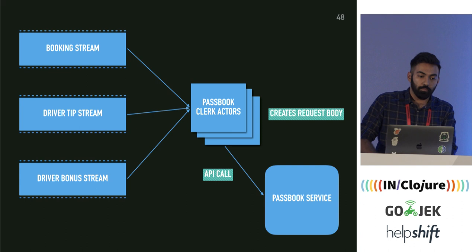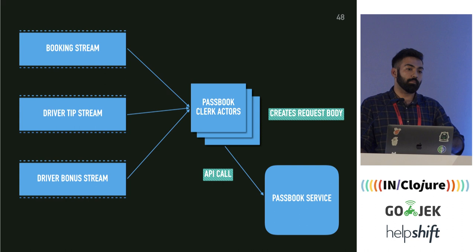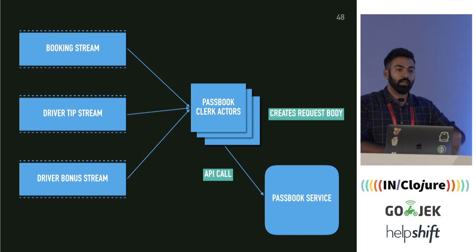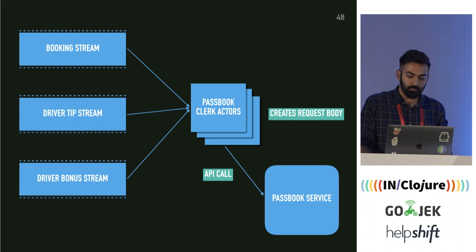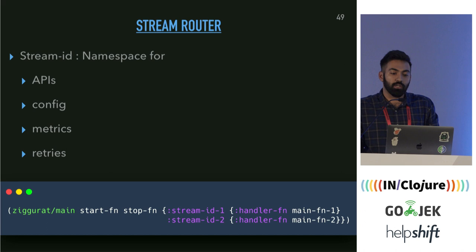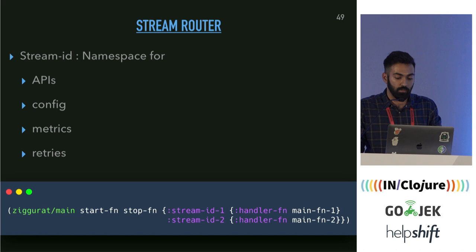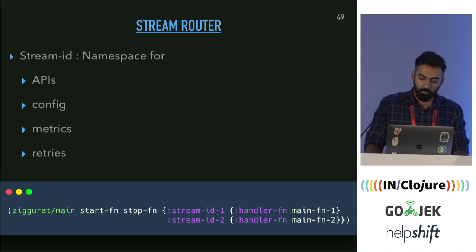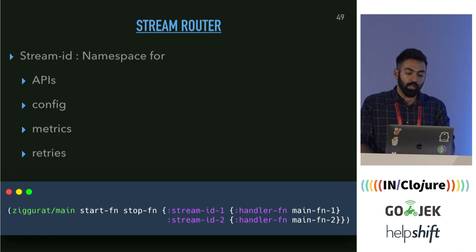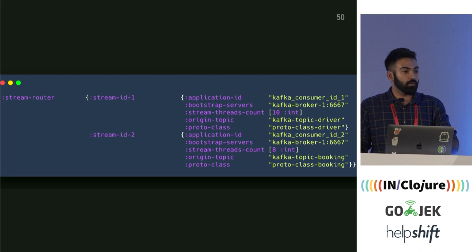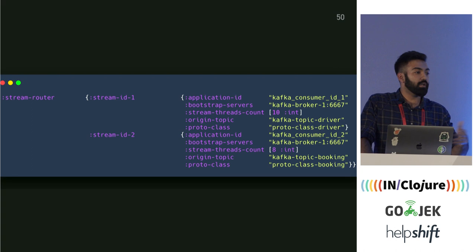A single actor can now read from three streams and process each stream separately on its own threads. Even if one stream fails, only that part of the actor would stop working; everything else runs fine. We introduced something called a stream router — like a normal HTTP router, it takes in a stream and routes it to a handler function. The stream ID is just a namespace for all the APIs, config, metrics, and retries for that particular stream. For each stream, you can have different numbers of threads, read from different Kafka clusters, have different offsets, different topics, and different protos.